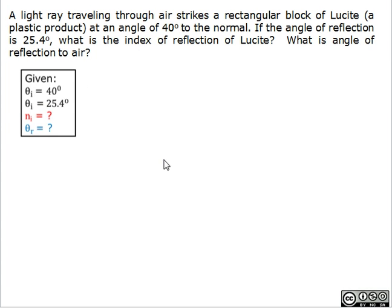So first of all, we must list all this information in the given box. The initial angle theta i equals 40 degrees, and the angle of refraction is 25.4 degrees. We need to calculate the index of refraction of lucite and the angle of refraction to air.